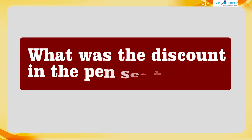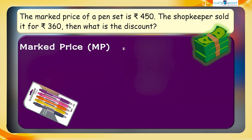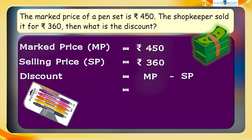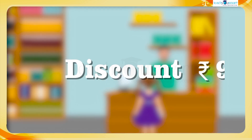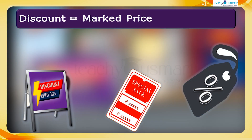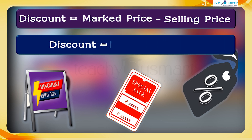Then what was the discount on the pen set? How can we find it? The marked price is rupees 450 and the shopkeeper sold the pen set for rupees 360, so the selling price is rupees 360. Discount equals marked price minus selling price, that is rupees 450 minus rupees 360 equals rupees 90. Therefore Lana got a discount of rupees 90 for the pen set. Generally, discount equals marked price minus selling price, or discount equals MP minus SP.